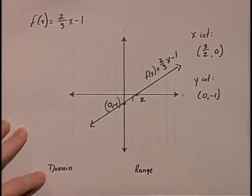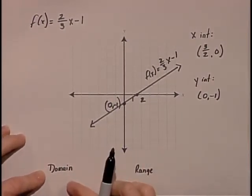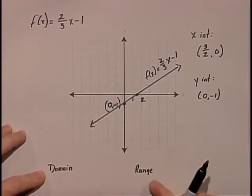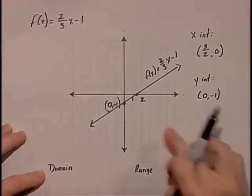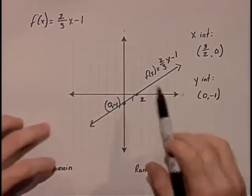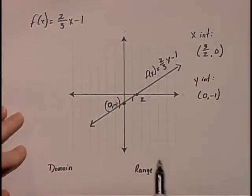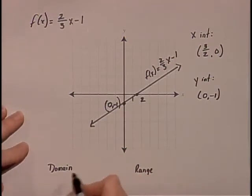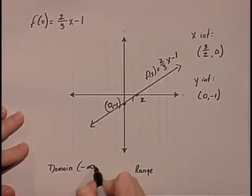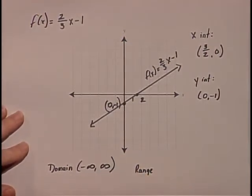They ask us to list the domain and the range. Domain being the possible x values and the range being the possible y values. This is a linear function that extends indefinitely in each direction. So the choices for x are all real numbers, extending from negative infinity to infinity.